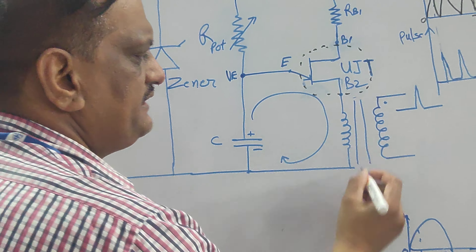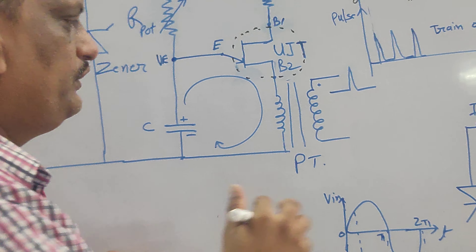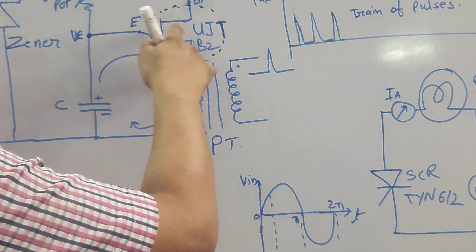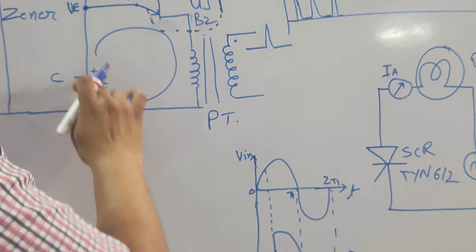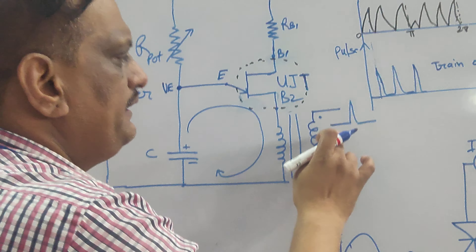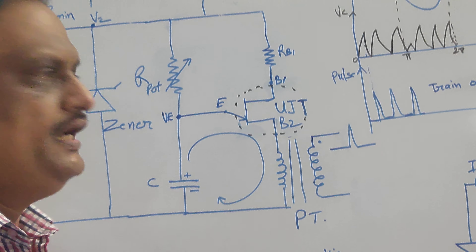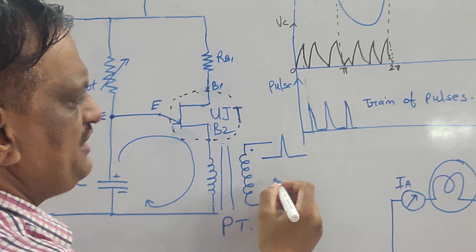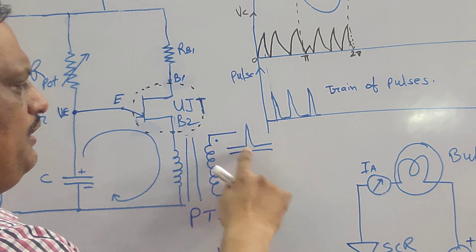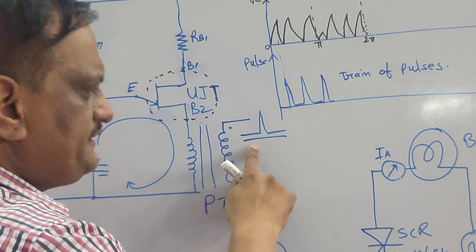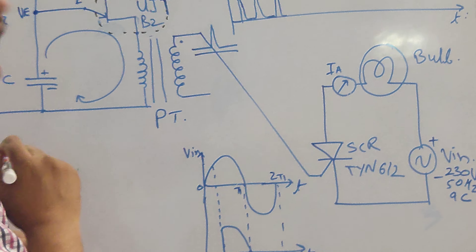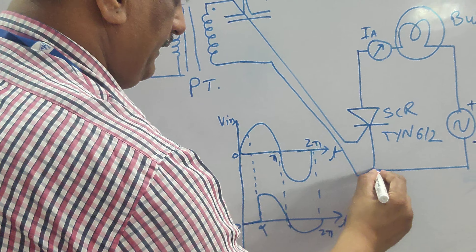When the capacitor discharges, there is a pulse transformer connected here. The pulse transformer primary winding receives the current due to the conduction of the UJT, and this UJT current induces a primary voltage in the pulse transformer. Accordingly, there will be a generation of the secondary pulse. Since it is a pulse transformer, the output is in the form of a pulse. These pulses come out from the pulse transformer secondary winding and are applied at the gate of the SCR, with the negative point connected accordingly.